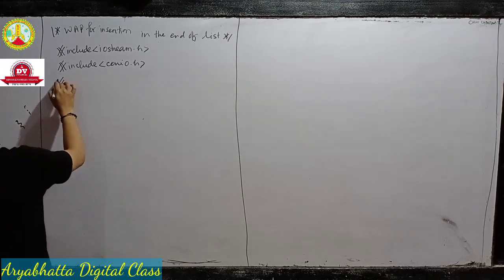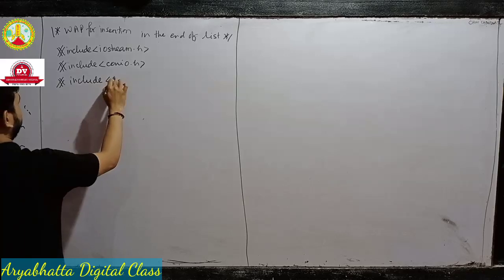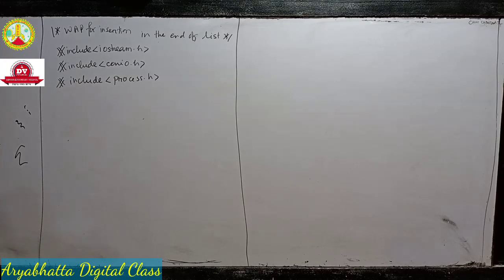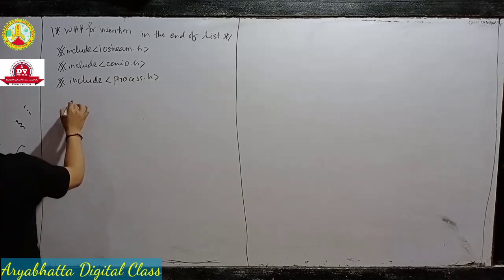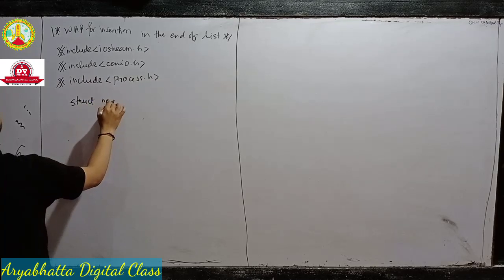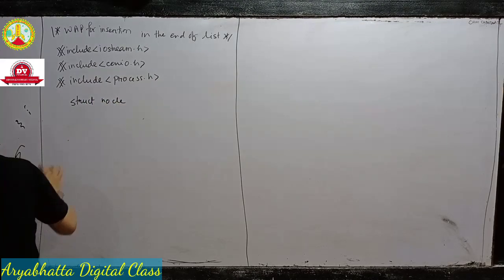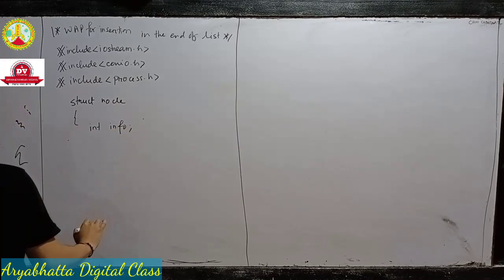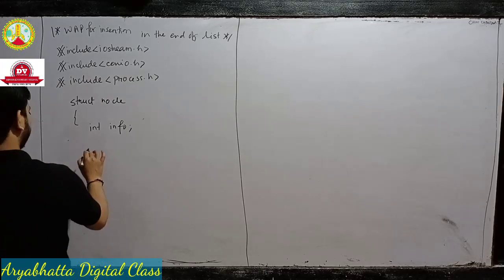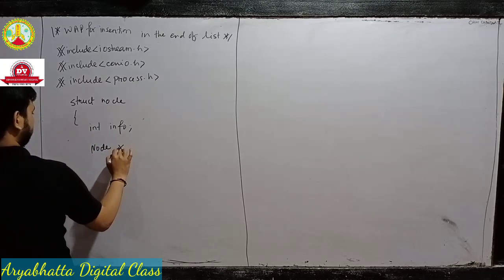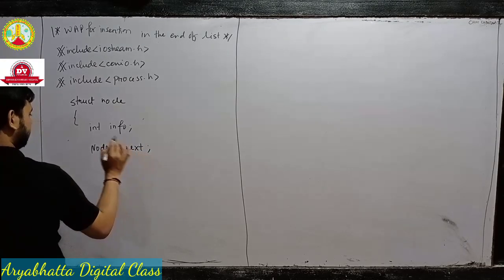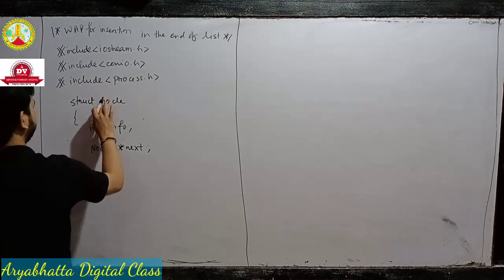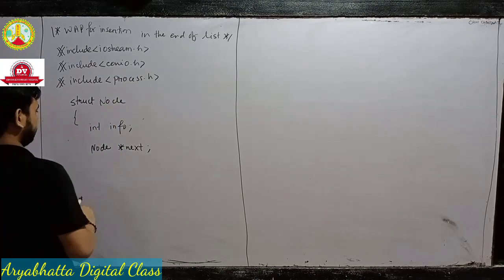One extra header file we need to add because of the exit function — process.h. We have to create a node using a structure. In the structure we use the info part as int, and one pointer of type Node — this capital N because the structure name is the same — called next.